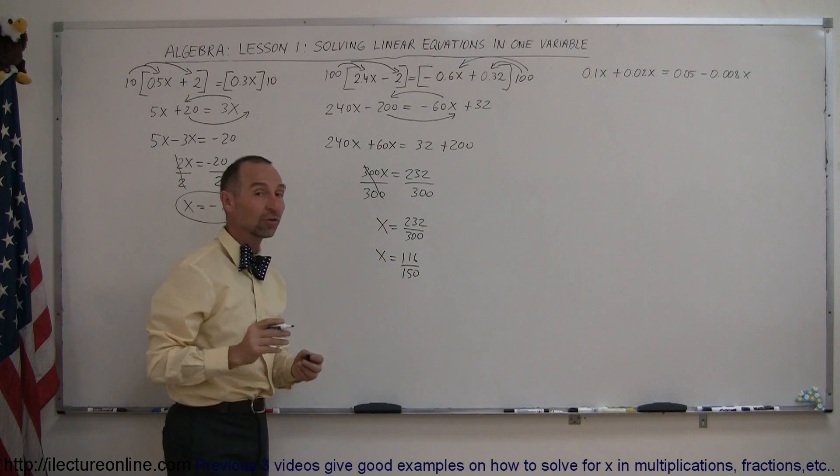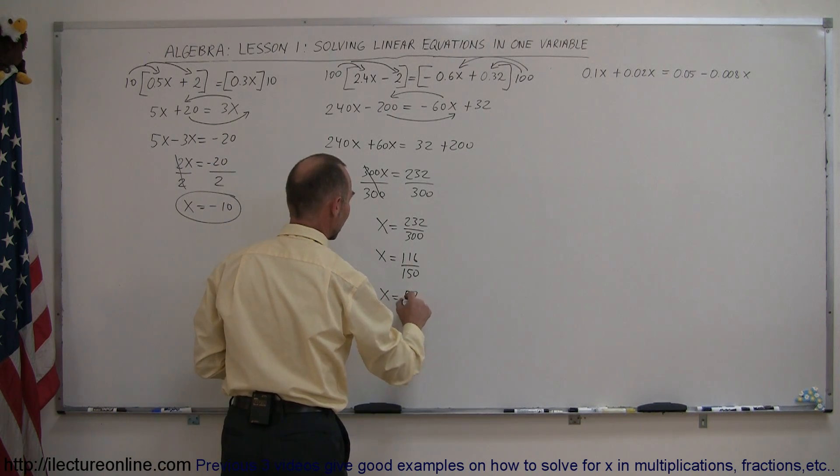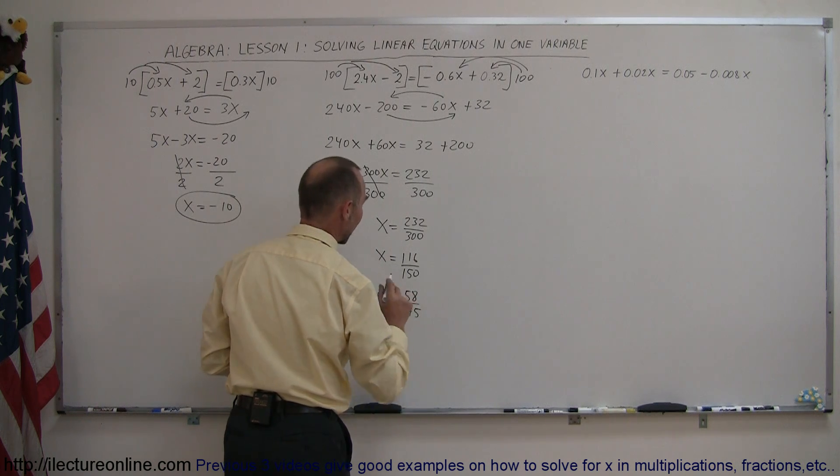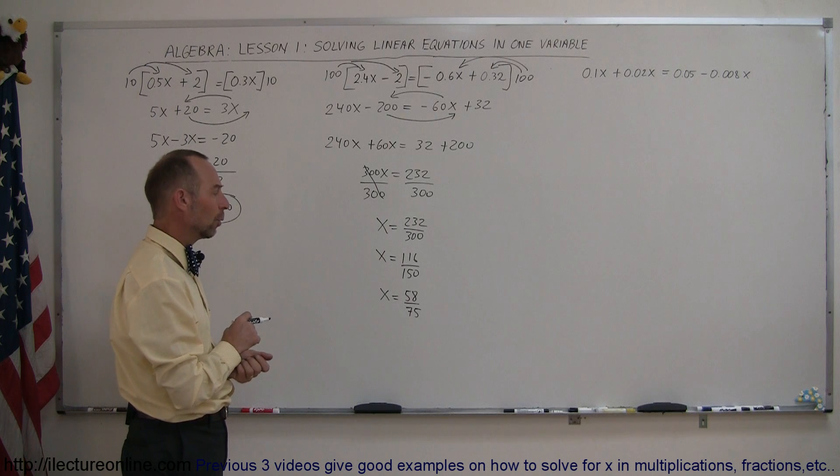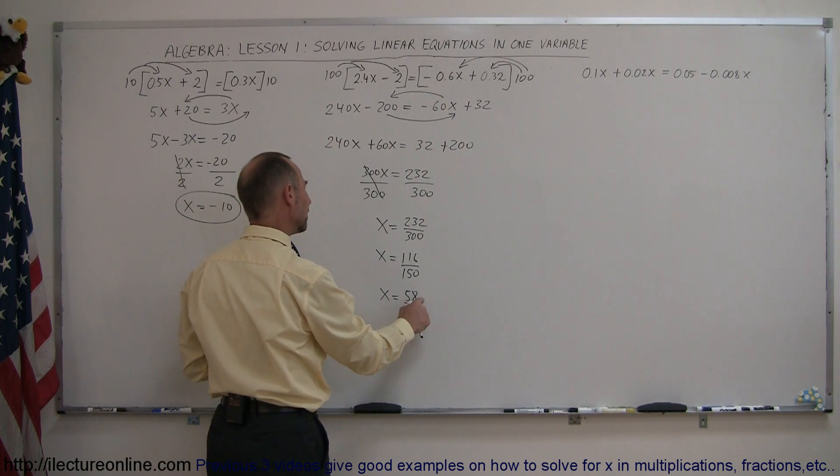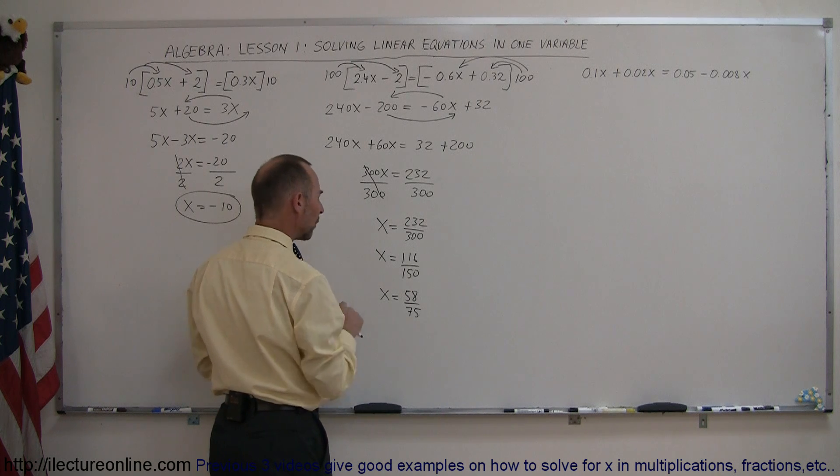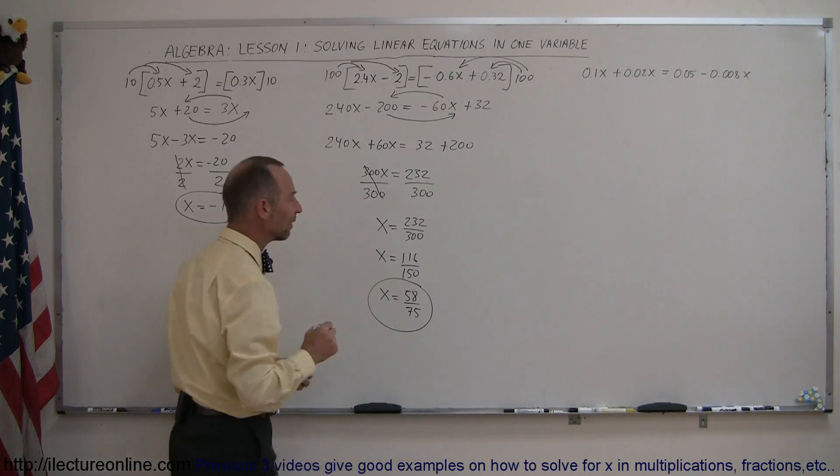Notice they're both still even, so we could still divide by 2, so x is equal to 58 divided by 75. At this point, they're no longer divisible by 2, and wonder if they're divisible by 3. Well, 75 is, but 58 is not. So now we're getting to the point where we probably cannot simplify this any further, so we'll just leave it at that.